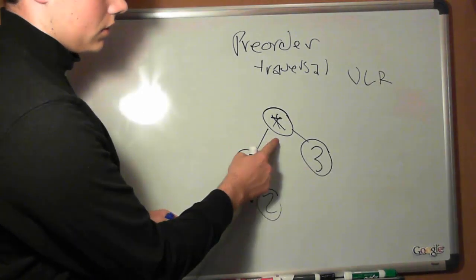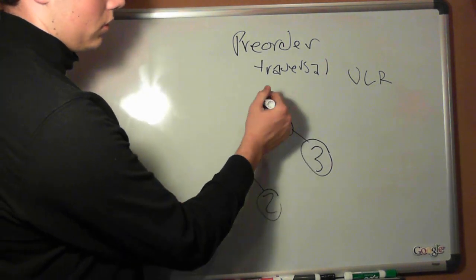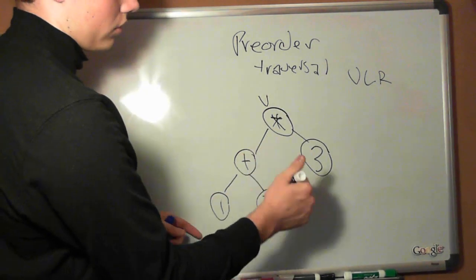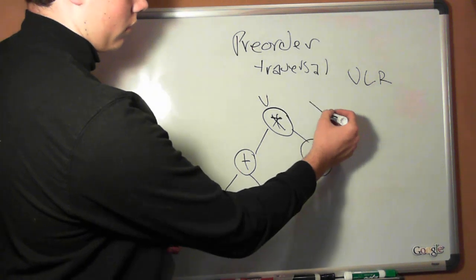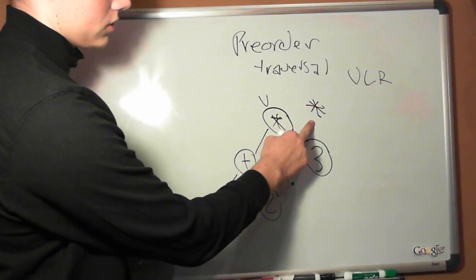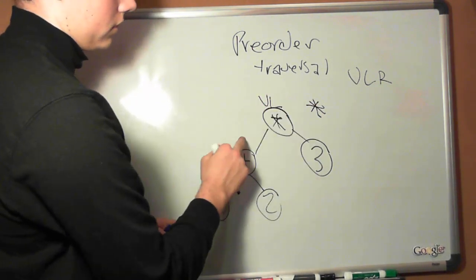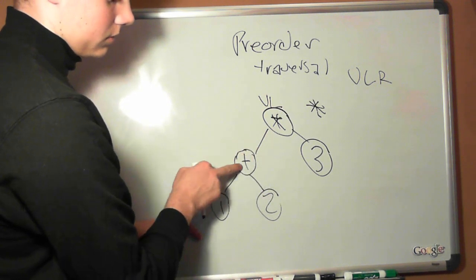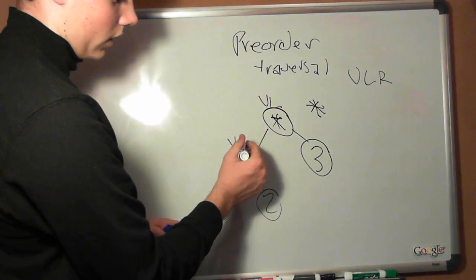We come up here to this multiplication symbol, we go value, we record the value. That is a multiplication sign. Then we go left. We jump down here to the left position which is this plus sign. We record the value.